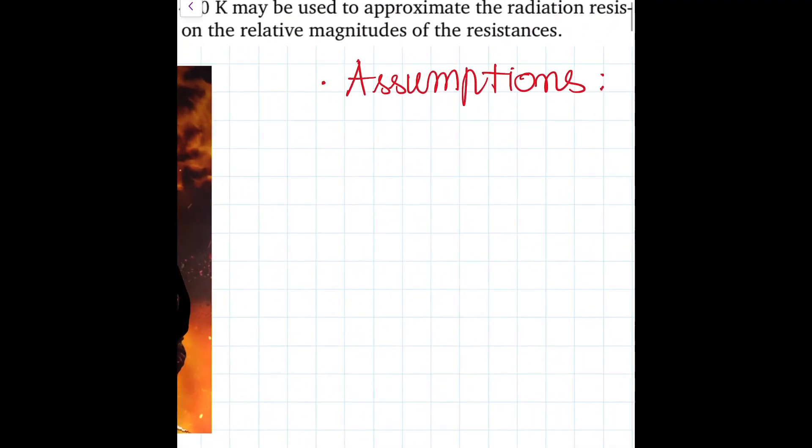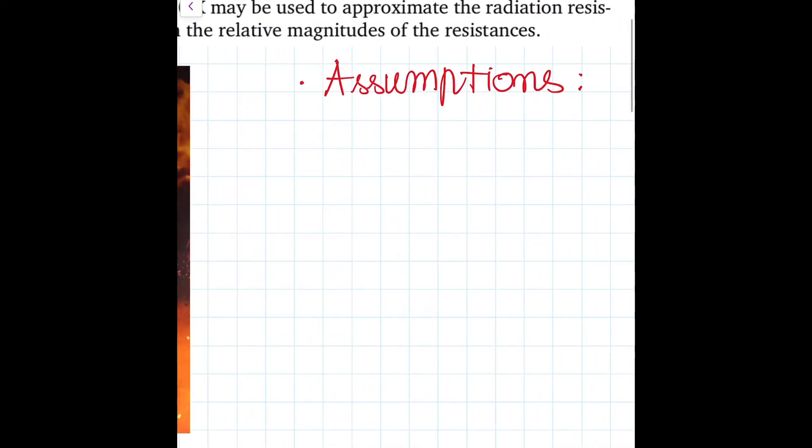The first one consists of writing and listing all the assumptions that we are going to employ to solve the problem. The first one in this case is steady-state conduction, as you may have already understood.